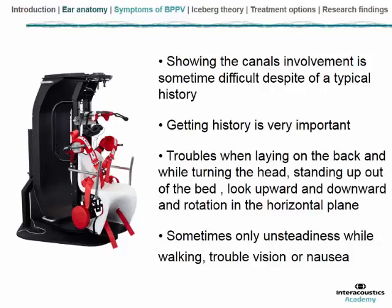It's sometimes difficult to make a positional vertigo diagnosis and despite typical clinical history it is difficult to show the involved canal. So it's really important to get a complete history from the beginning. Usually the patient describes trouble when lying on their back, sometimes just on one side but most of the time on both sides, indicating lateral canal involvement — the only canal with expression on both sides in bed. If the patient is only impaired on one side it could be a posterior canal involvement. Usually the patient will be disabled when standing up out of bed in the morning, while looking upward and downward, and during head rotation in the horizontal plane.